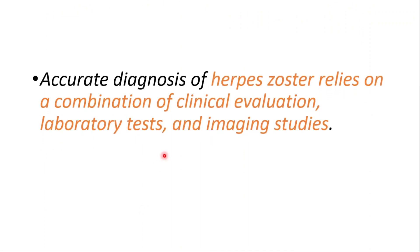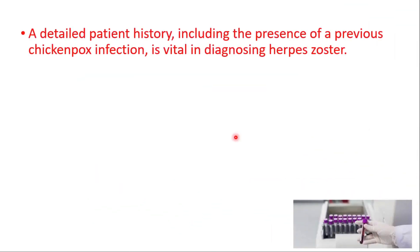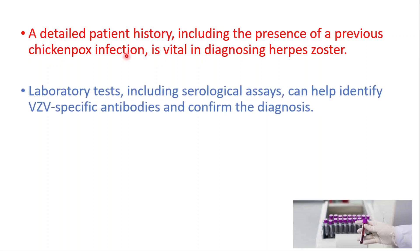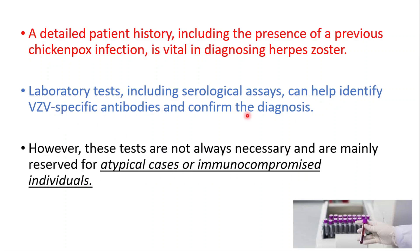Accurate diagnosis of herpes zoster relies on a combination of clinical evaluation, laboratory tests, and imaging studies. A detailed patient history, including the presence of a previous chickenpox infection, is vital. Laboratory tests including serological assays can help identify VZV-specific antibodies and confirm the diagnosis; however, these tests are mainly reserved for atypical cases or immunocompromised individuals.